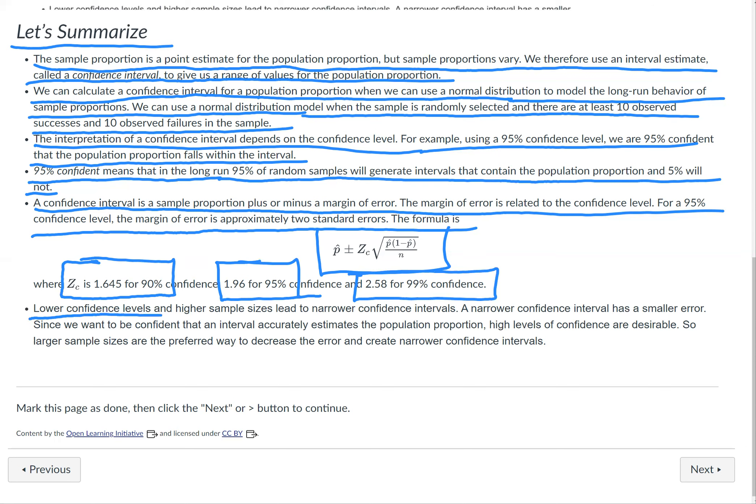Lower confidence levels and higher sample sizes lead to narrower confidence intervals. So it really narrows down what your population proportion could be. A narrower confidence interval has a smaller error.